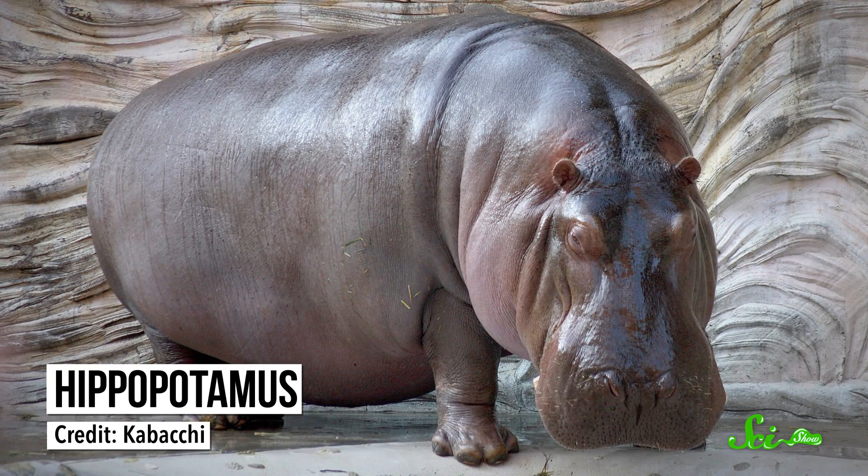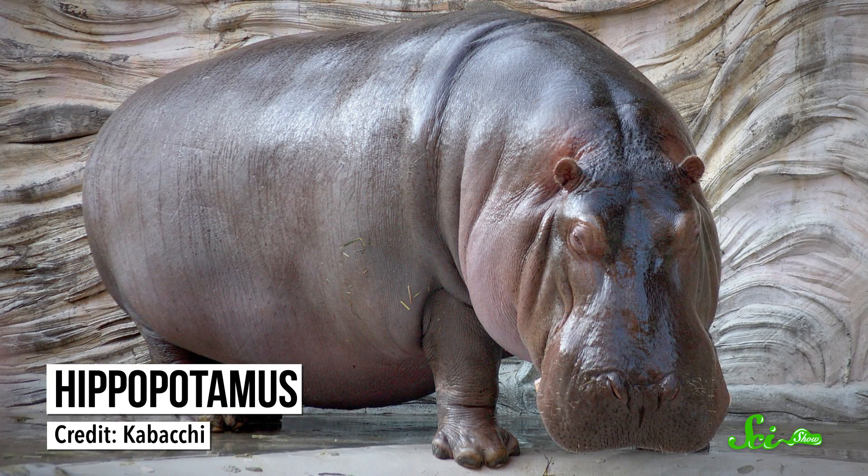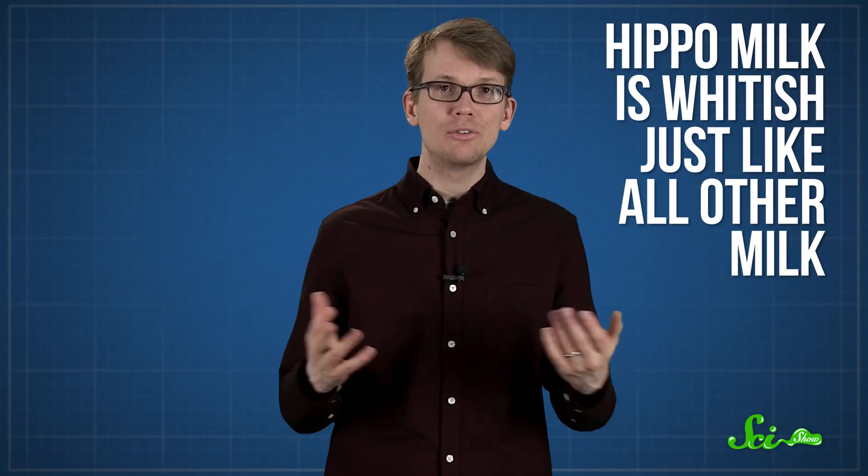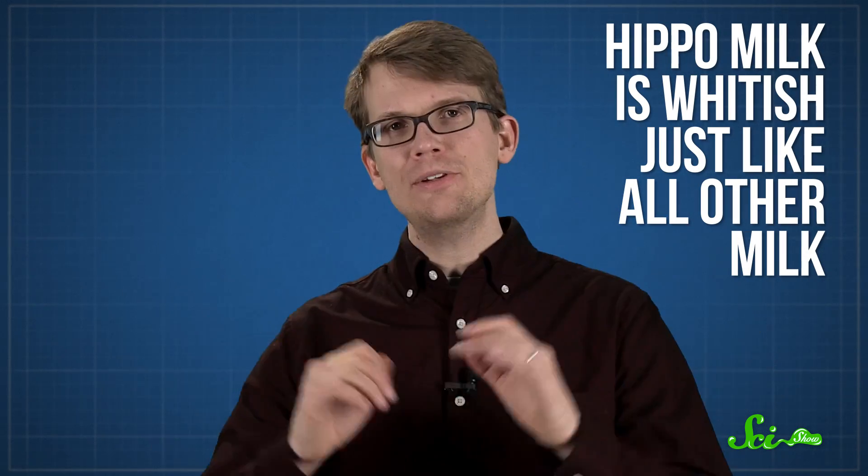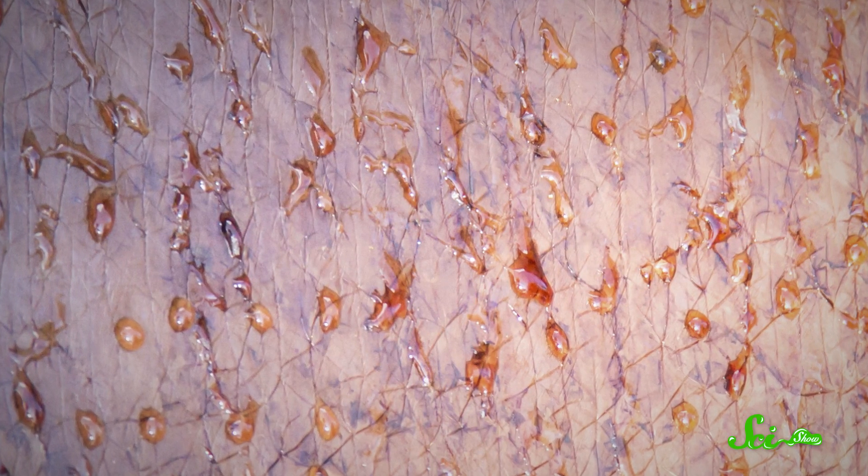Now before we sign off, I want to clear up one milky myth that gets repeated a lot. Hippopotamuses are mammals, and they make milk. You may have heard that it is pink, but it is not. Hippo milk is whitish, just like all other milk. This misconception probably comes from the fact that hippos do secrete a super useful mucus on their skin that helps protect against UV rays, and works as an antibiotic, and the mucus is a reddish color. But it is not milk. Though again, you probably wouldn't want to go up to a hippo and check.